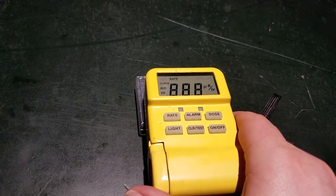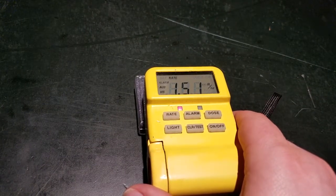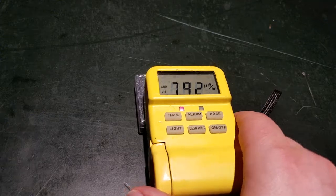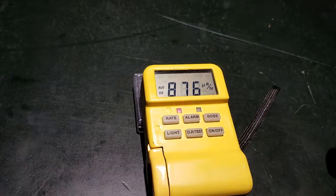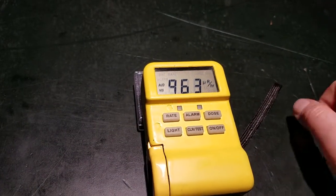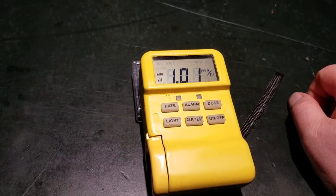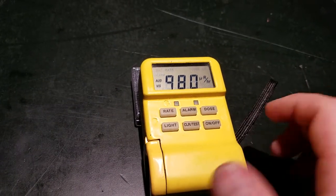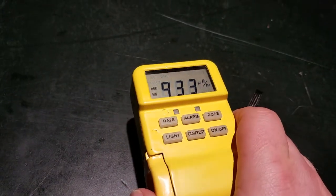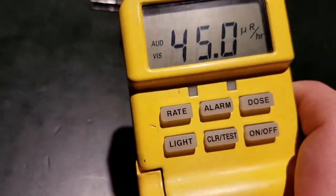There's my low-level alarm. There's my high-level alarm. If I turn rate off, I've actually got the alarms set really low on this just because I want to know if I'm near anything that's putting off any amount of radiation.